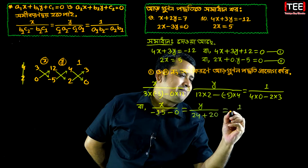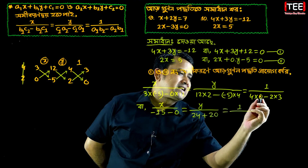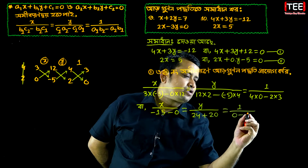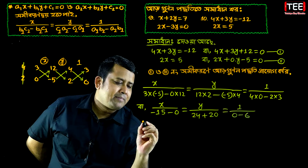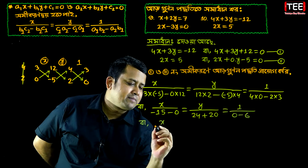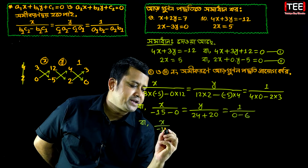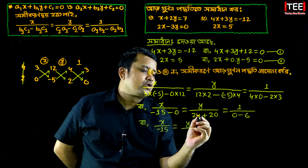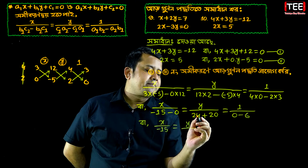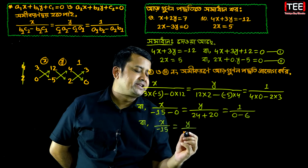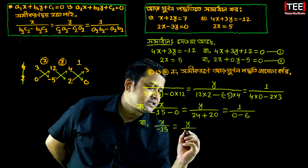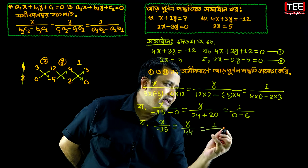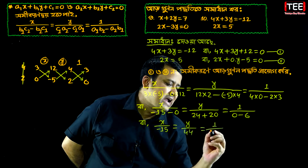2x minus 15 equal to y minus 24 plus 20, equal to 1 by minus 6.